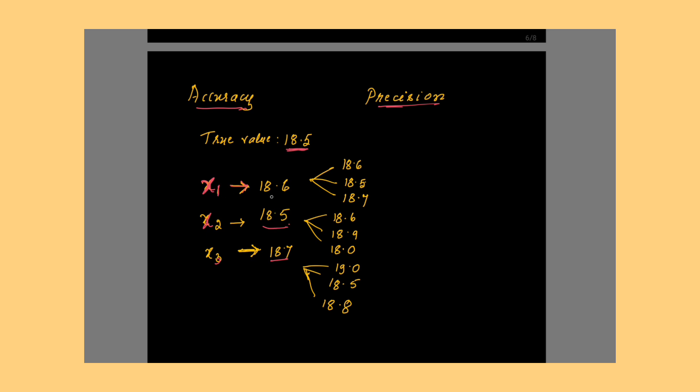But what about precision? This student x1 who got the value 18.6, first tried the experiment, got the value 18.6, then retried, got it as 18.5, then retried again 18.7, then taking the mean of these three values, the final value is 18.6. Check here for 18.6, 18.5 and 18.7, how close these values are there. After every try, there is a difference here in the values. How much closer are these values to each other? Precision is values closer to each other. In the second case, student x2 first got 18.6, retried 18.9, retried 18.0, then the mean is 18.5. Student x3 got the value 19 in the first attempt, retried 18.5, retried 18.8, then taking the mean got the value as 18.7. This way, the students got the final value as 18.6, 18.5, 18.7 respectively.